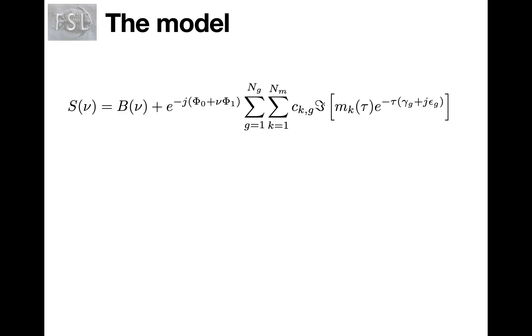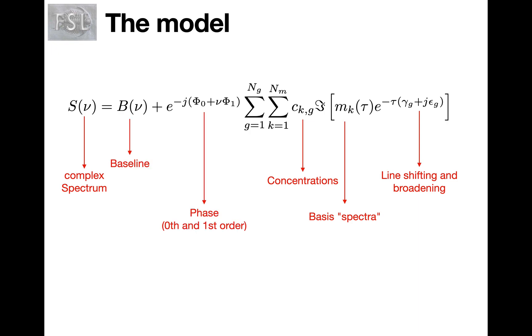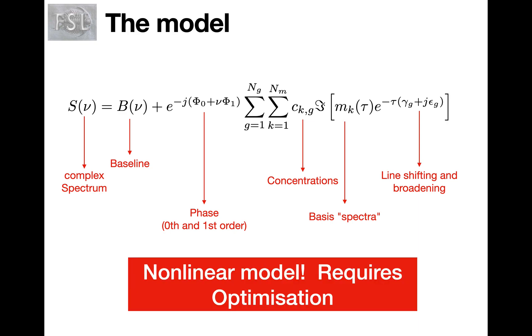Putting it all together, the model has this mathematical form. We've got our complex spectrum on the left hand side. We get our concentrations here. We have our design matrix which is basis spectra here as a function of time. Our confound parameters related to line shape and our phase parameters here and our baseline model. This is a nonlinear model requiring optimization, so no analytic closed forms, and so it is typically harder and slower than the simple GLM.